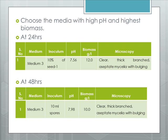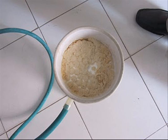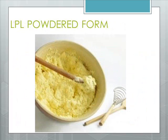For acetone solvent precipitation, we use chilled acetone, which is added to the broth in a 1 to 2 ratio. The enzyme is precipitated at the bottom, which is then separated under vacuum by filtration technique. The resulting enzyme is heated in a hot air oven to obtain the dry powdered form of the enzyme.